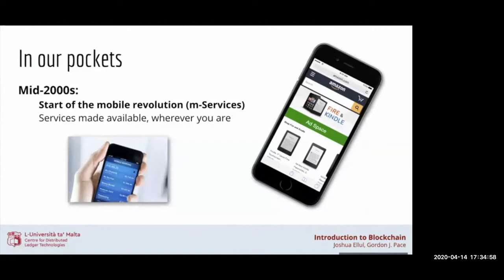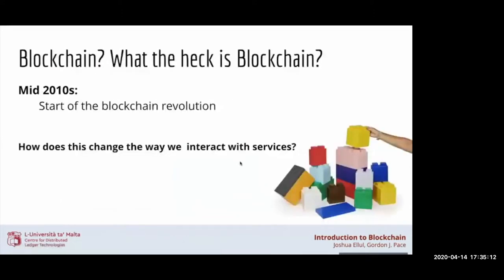In the mid-2000s came the mobile revolution, and those same services could now be accessed from wherever we are by reaching into our pockets — mobile banking, online shopping. Now the blockchain revolution is upon us, emerging in the early to mid-2010s. What is going to change in how we interact with services? The internet and mobile revolutions changed service delivery very clearly, but what is blockchain actually going to change in respect to service provision?